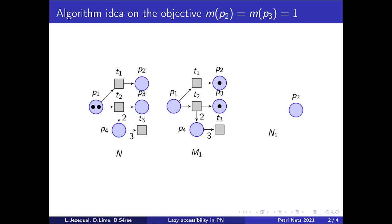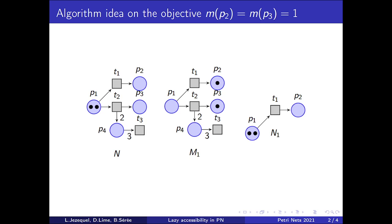Consider P2 first. The only way to mark it is to fire T1. For firing T1, the place P1 needs to be marked. The subnet N1 suffices to guarantee that P2 can be marked in the original net N because the full preset of each transition is considered. We call it P-Complete.